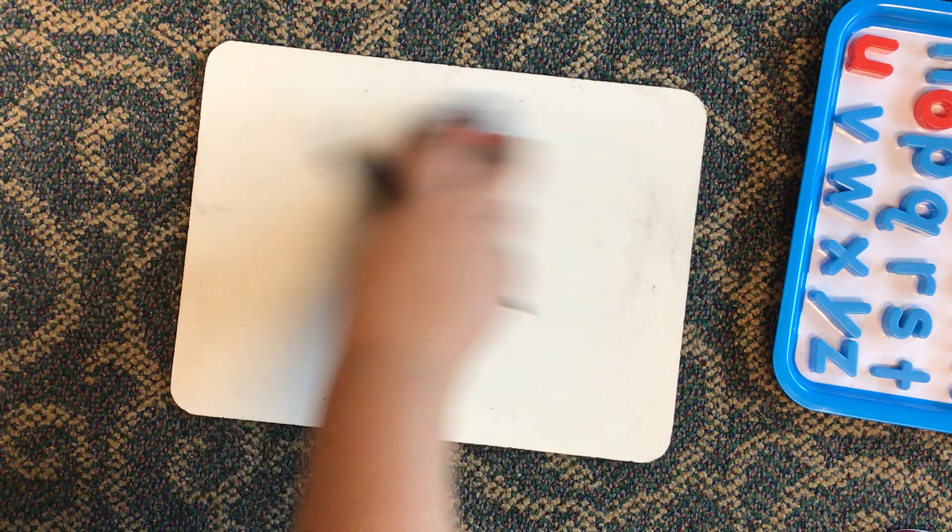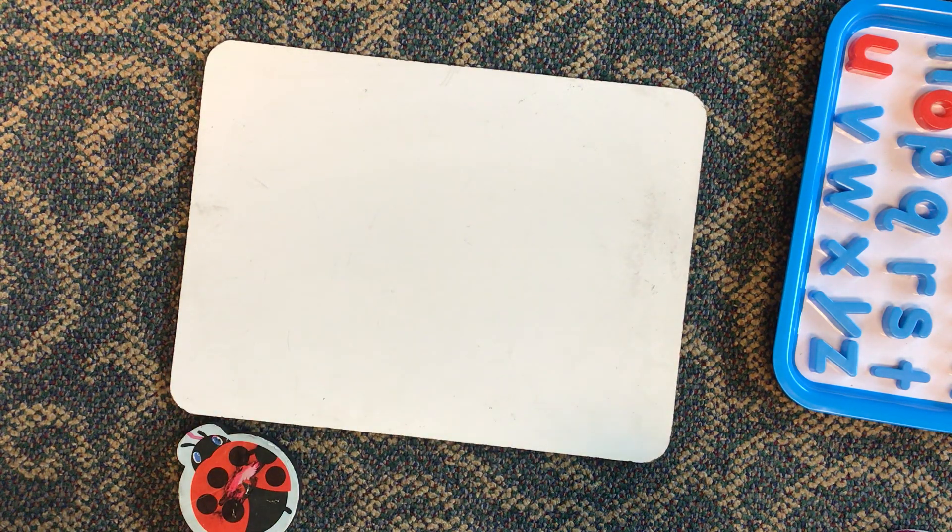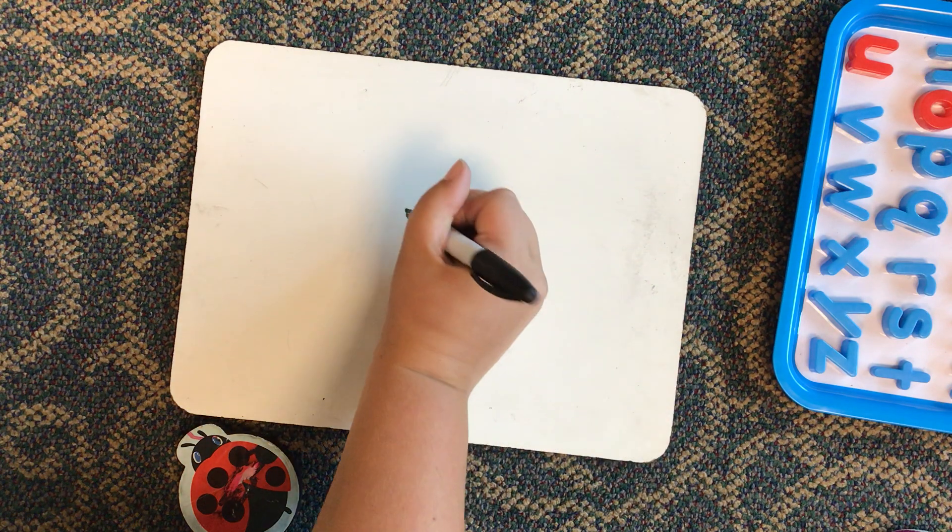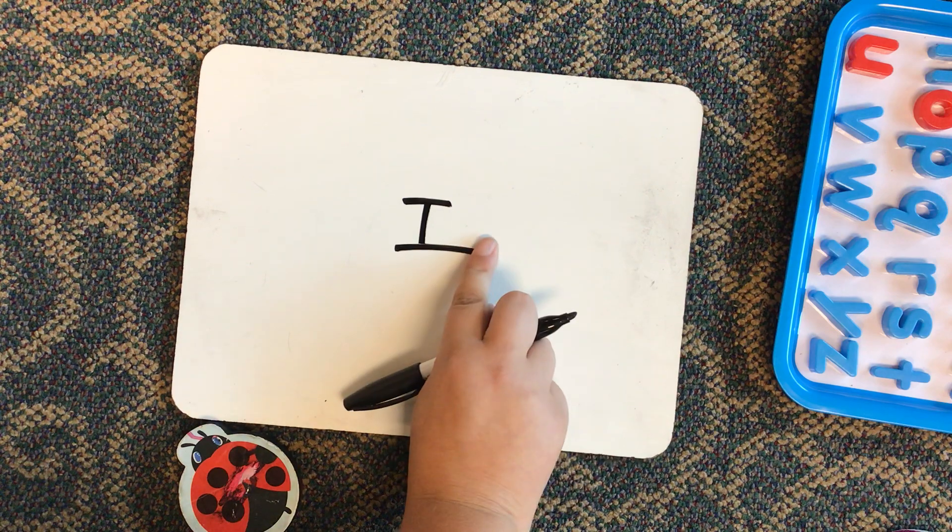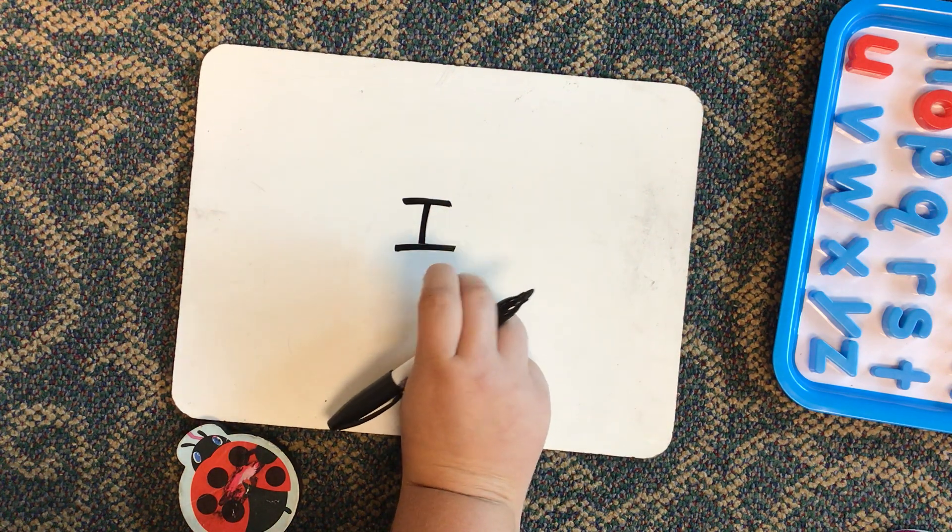Now, we're going to erase it and we're going to write a sight word we've already learned. A sight word we've already learned is I. So, I'm going to write that. I. Okay, there's the sight word I.